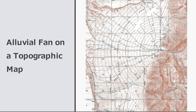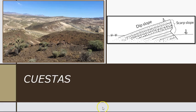This is an alluvial fan on a topographic map. Cuestas are tilted blocks of bedrock with a steeper and less steep side. The less steep side is the top bed in a stack of strata, or layered rock, and is called the dip slope. The scarp slope will typically be steeper because it cuts across beds of strata, allowing it to hold a steeper slope.